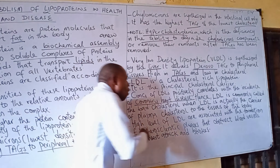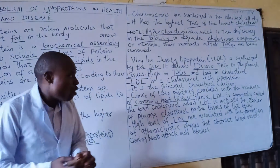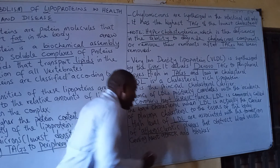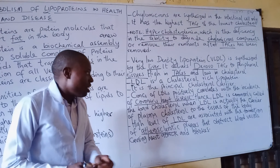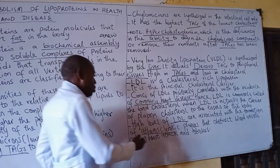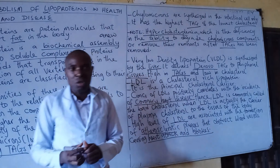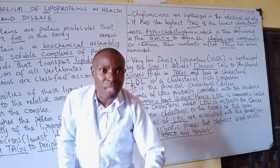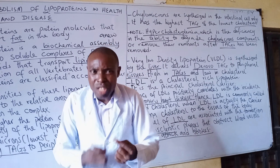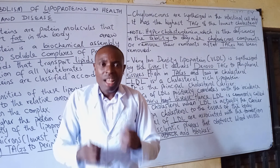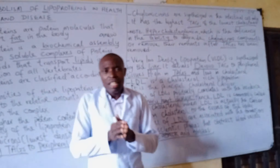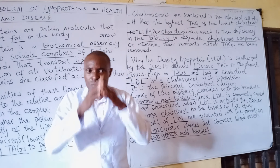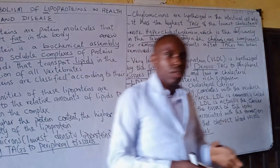Elevated LDL is associated with the formation of an atherosclerotic plaque that obstructs blood vessels, causing heart attacks and strokes. That is why you are always advised to take food substances that are low in cholesterol. This is part 1; in part 2 we will talk more about HDL. God bless you, thank you.